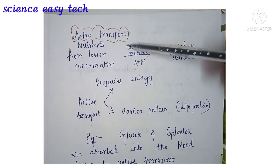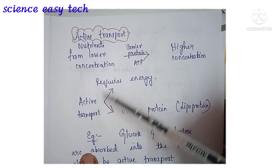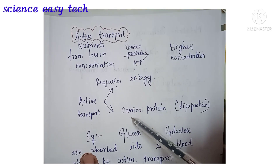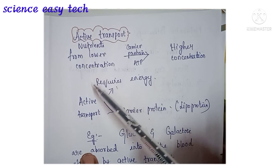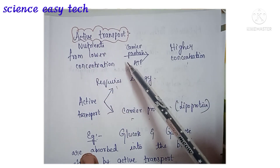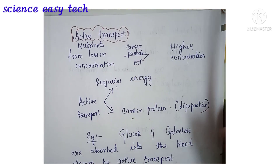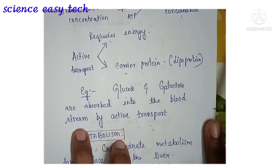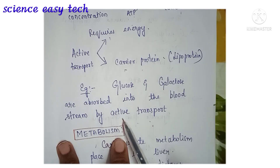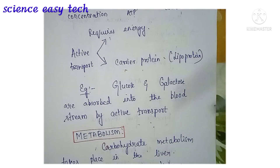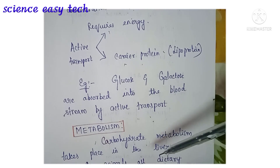The next method of absorption is active transport. Active transport requires energy or ATP as well as a carrier protein — mostly a lipoprotein. Here, nutrients are moved from lower concentration to higher concentration. Glucose and galactose are absorbed into the bloodstream by active transport, while fructose is absorbed by diffusion. Glucose and galactose require energy for absorption into the bloodstream by means of active transport.